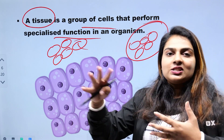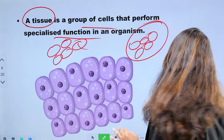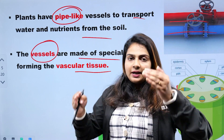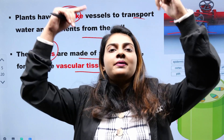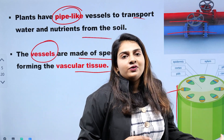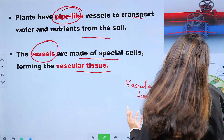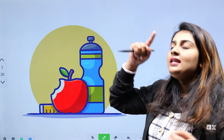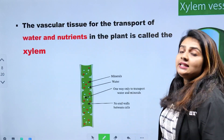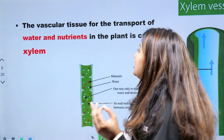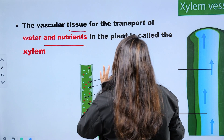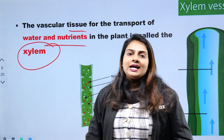We call vascular tissues a pipe-like structure. The vascular tissue for the transportation of water and nutrients is called xylem.